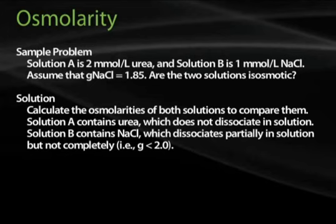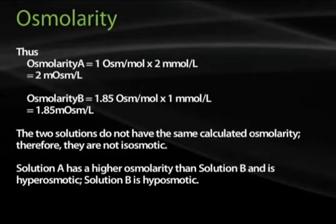Solution A contains urea, which does not dissociate in solution. Solution B contains NaCl, which dissociates partially in solution but not completely, i.e. G is less than 2.0. The osmolarity of solution A is 1 osm/mol times 2 millimoles per liter, or 2 milliosms per liter. The osmolarity of solution B is 1.85 osms per mole times 1 millimole per liter, or 1.85 milliosms per liter.